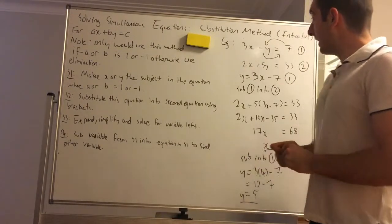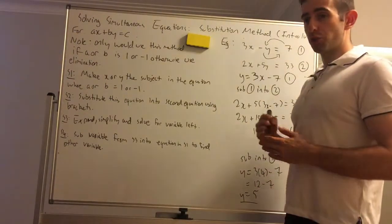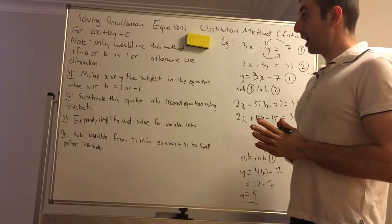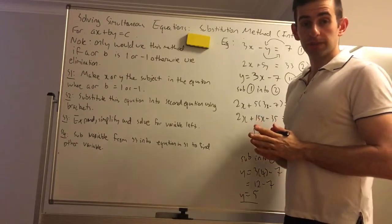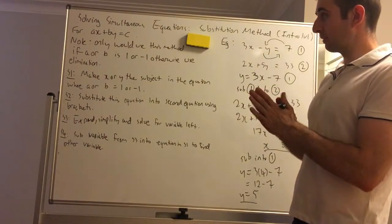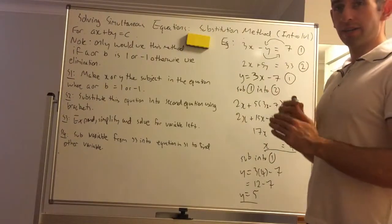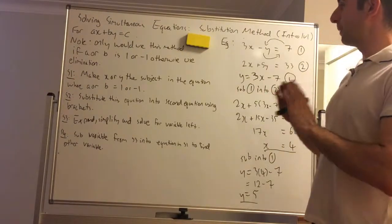And for actually advanced level, simultaneous equation involving quadratics, you're going to need to use substitution method. So substitution method is best for the hard type of simultaneous questions, but for basic linear ones, ax plus by equals c, elimination is 9 out of 10 times better.